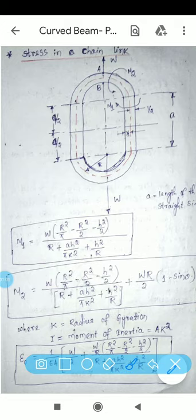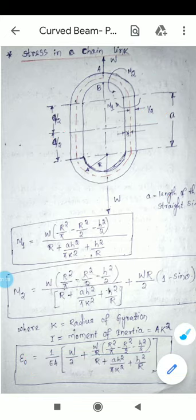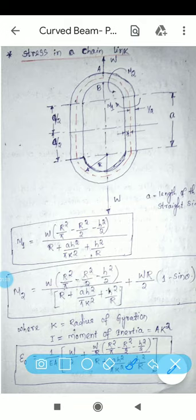In the chain link, there are two fibers: the inside fiber and the outside fiber. The middle one is the centroidal axis or geometrical axis. A tensile load is acting, and M1 and M2 are the moments, where M1 is the uniform bending moment generated in the chain link.